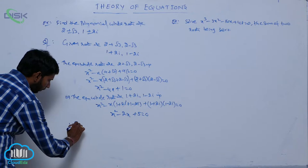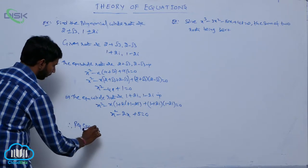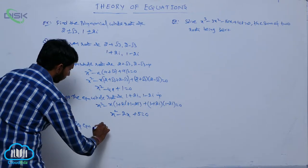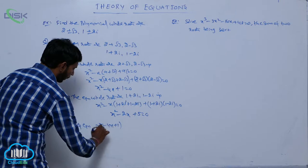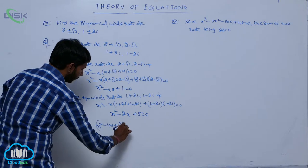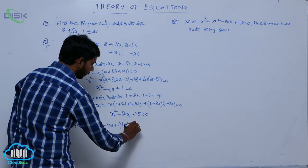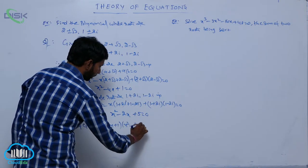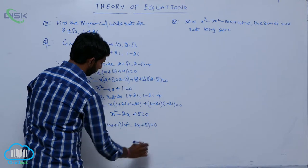Therefore, the required equation is (x squared minus 4x plus 1)(x squared minus 2x plus 5) equals 0.